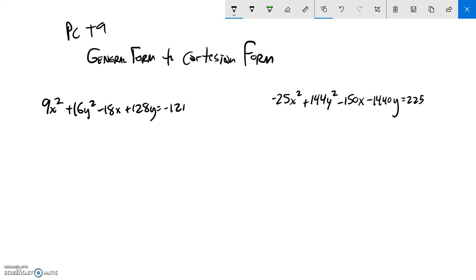I want to get these into that form where it's like x minus h squared over a squared and then plus or minus, depending on if it's hyperbola or an ellipse, y minus k squared over b squared equals 1. That's where I want to get it to.